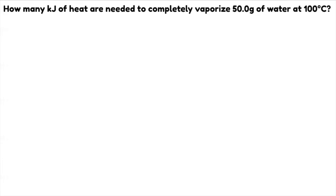Let's draw the heating curve for water again. Heating curves usually look like this — the length of each part just differs but they are the same. It says you have to completely vaporize water at 100 degrees Celsius.